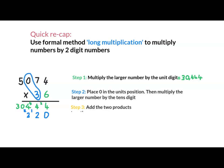0 times 3, 0. Place my 2 down. 5 times 3, 15. Step 2 is now complete. 5,074 multiplied by 30 gives you a product of 152,220.